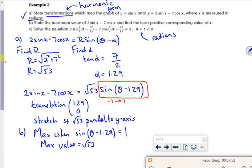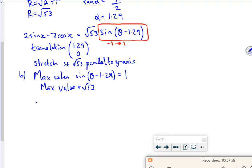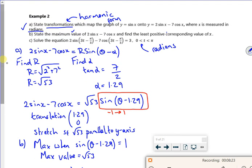So I've got the maximum value. Now I want to know where it occurs. So where it occurs, is where my sin theta minus 1.29 is equal to 1. So theta minus 1.29 is equal to pi by 2. So then if I add on the 1.29, you get 2.86 radians. And that's where it is the maximum value. So that's part B done.